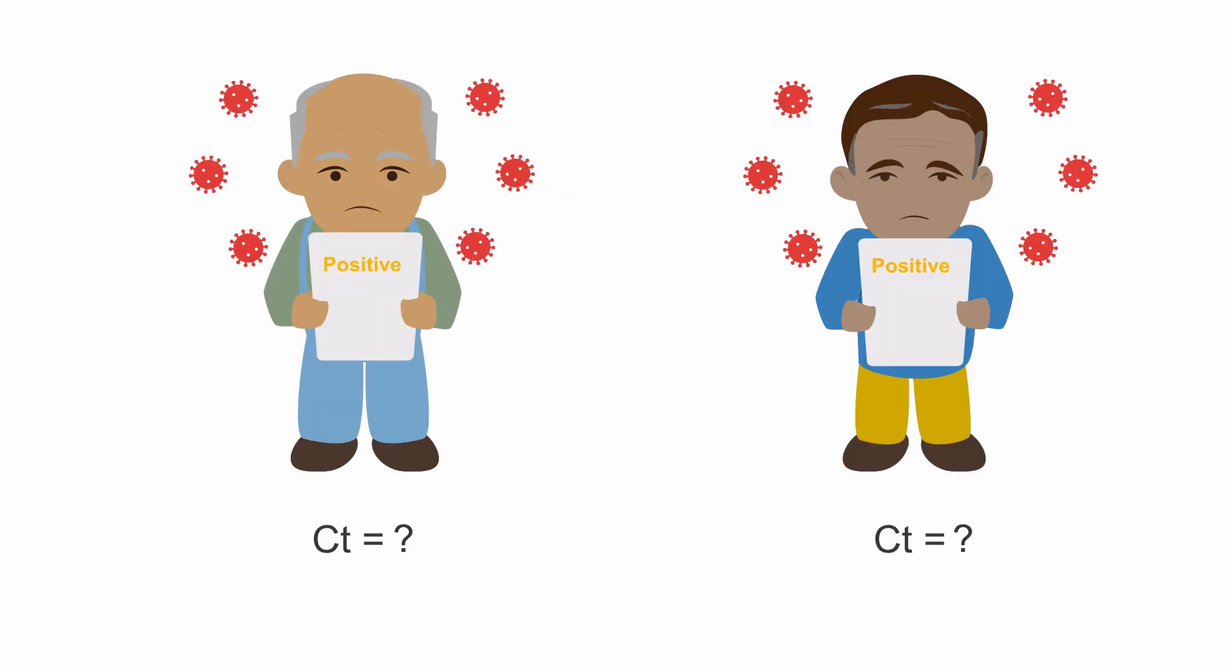Therefore, as a clinician, you would not only want to know if your patient was positive on RT-PCR, but also by how much? What was their initial cycle threshold value? Because as we have seen, a patient with a cycle threshold value of 10 has 1 million times as many viral particles in their throat as compared to a patient with a cycle threshold value of 30.